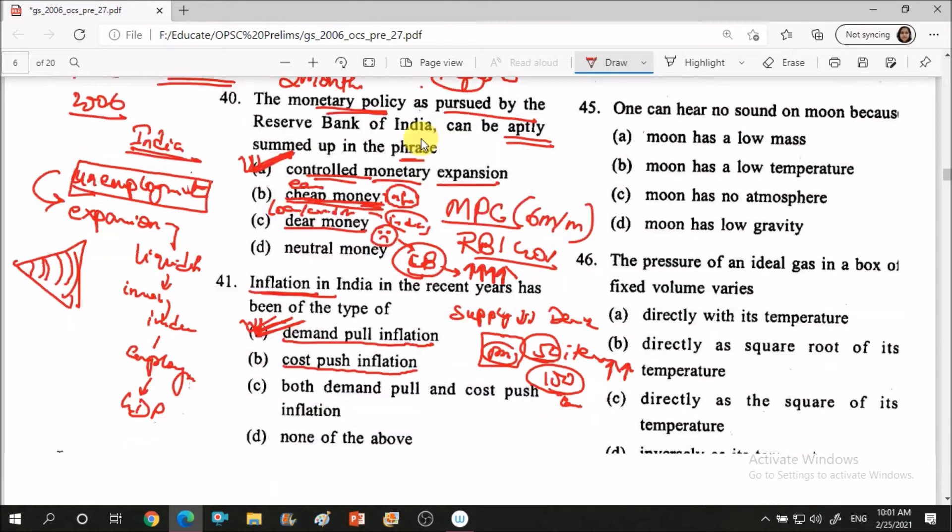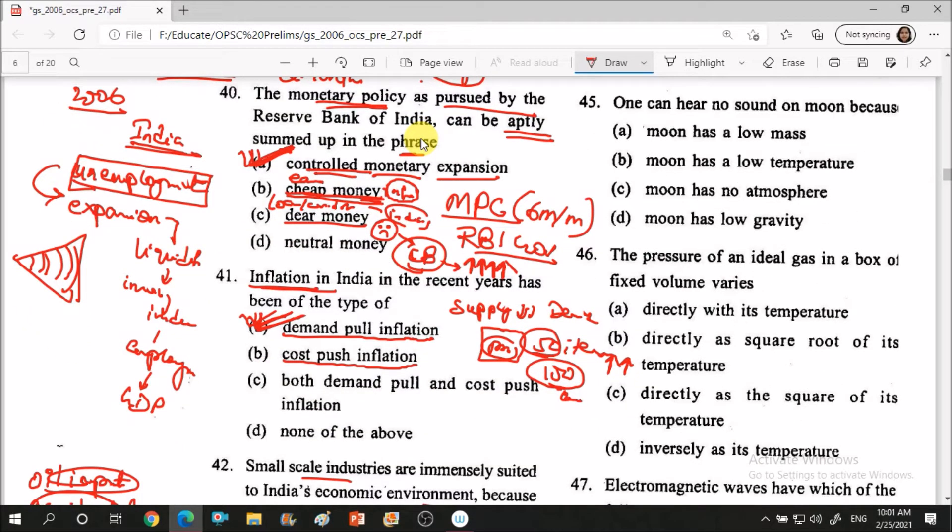Next question: one can hear no sound on the moon because of dash. Option A: moon has a low mass. Option B: moon has a low temperature. Option C: moon has no atmosphere. Option D: moon has no gravity. So basically if you see, moon has no atmosphere. Option C is correct. So sound,